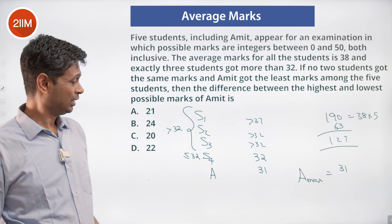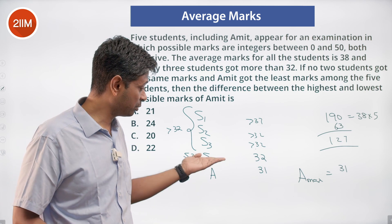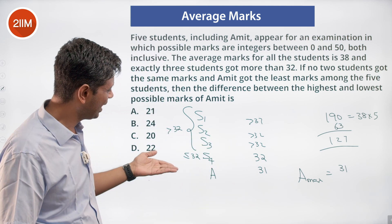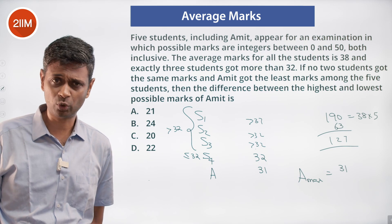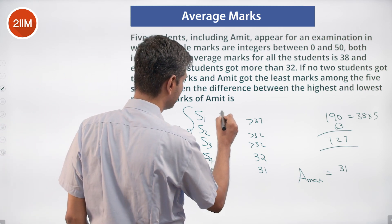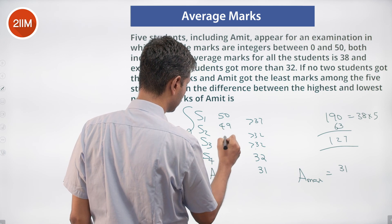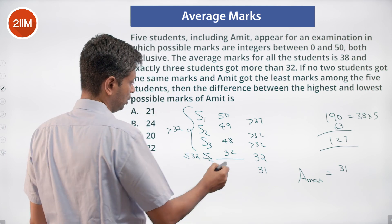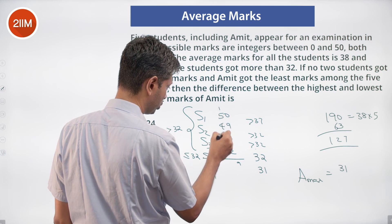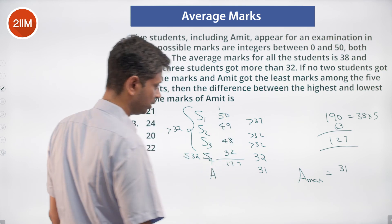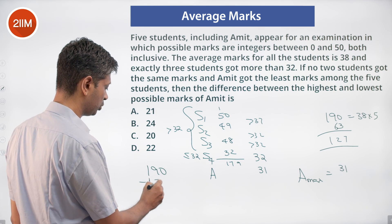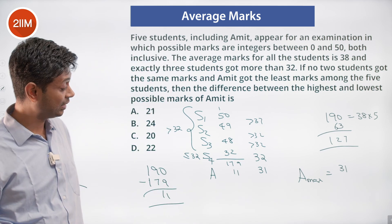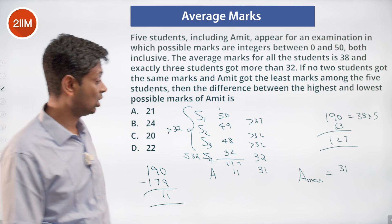Amit cannot be 32 because then s4 would also need to be 33 or more, making four students above 32, contradicting the condition. So Amit's maximum is 31. For Amit's minimum, all other four must be as high as possible: 50, 49, 48, and 32. These four add up to 179. Since the total is 190, Amit gets 190 − 179 = 11. So Amit's minimum is 11.